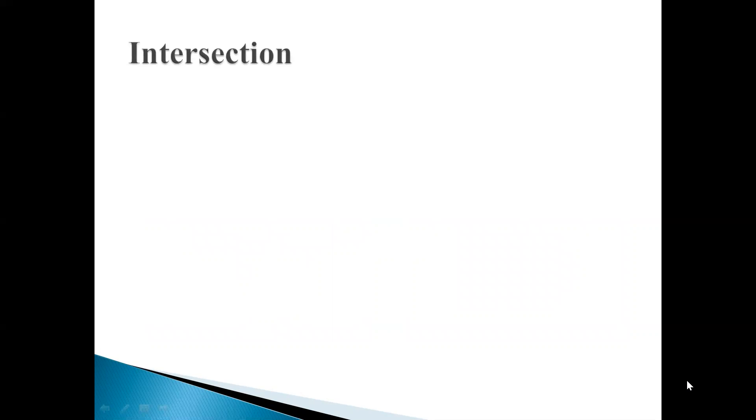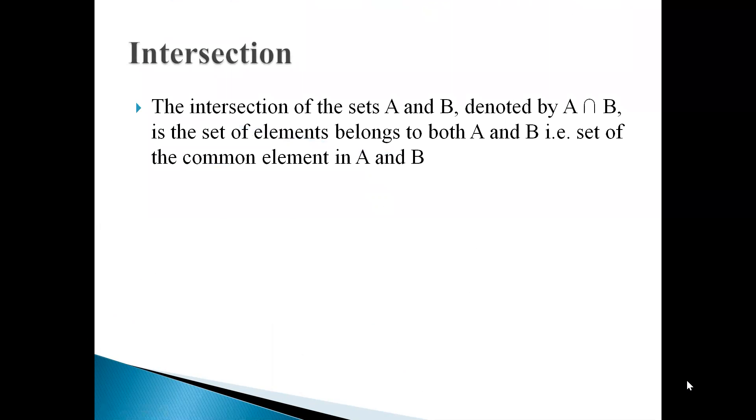The next operation is intersection. The definition of intersection is the intersection of sets A and B denoted by A intersect B is the set of elements belonging to both A and B, that is the set of common elements in A and B. Here, the reverse direction of U represents intersection operation. For example, in the previous sets A and B, we have common element B. So if we want to find out the A intersect B of the previous example, then the answer is B only.